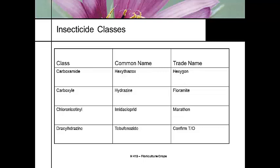Chloronicotinyls — also called neonicotinoids — represent probably the most active area of pesticide development right now. The name sounds like nicotine because they share a similar chemical structure. Nicotine sulfate is an incredible insecticide. Many of the modern pesticides in this group are insect growth regulators that disrupt life cycle stages.